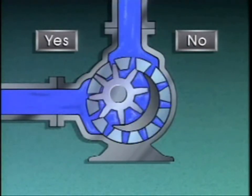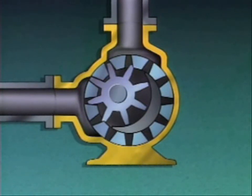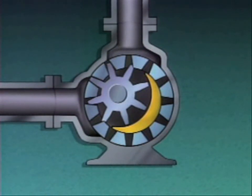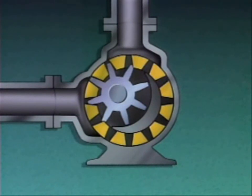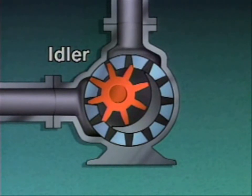This is an internal gear pump. This pump has a casing with a suction port and a discharge port. Inside the casing are a crescent-shaped spacer and two gears. The spacer prevents liquid from flowing from the discharge back to the suction of the pump. On this pump, the outside gear is rotated by the pump's driver, so it's the power or driver gear. The inside gear moves because its teeth are meshed with the teeth of the driver gear, so it's the idler gear. But keep in mind that on some internal gear pumps, the inside gear is the driver and the outside gear is the idler.